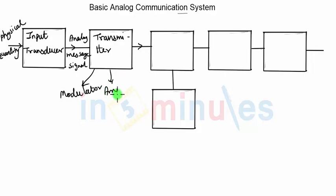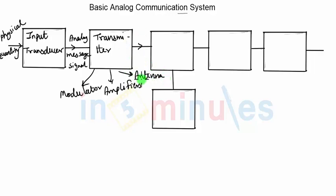The transmitter also includes amplifiers, because the final signal that needs to be transmitted must be amplified. At the output of the transmitter there will be an antenna — though the antenna is optional, since if the system is a wired communication system there may not be an antenna. The output of the transmitter is then suitable enough to be passed through the communication channel.